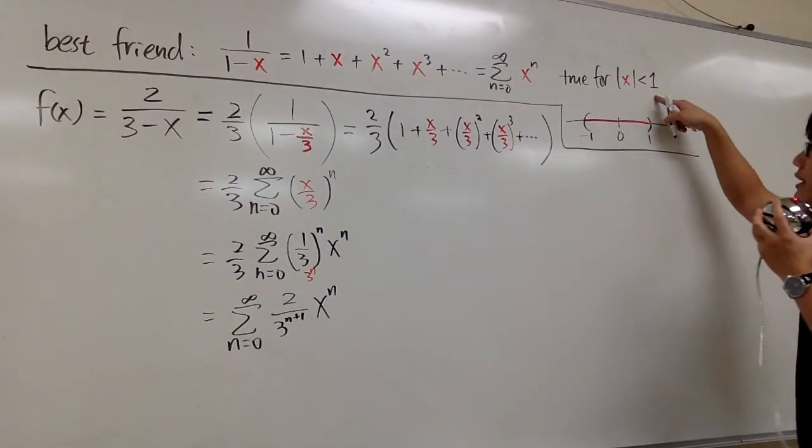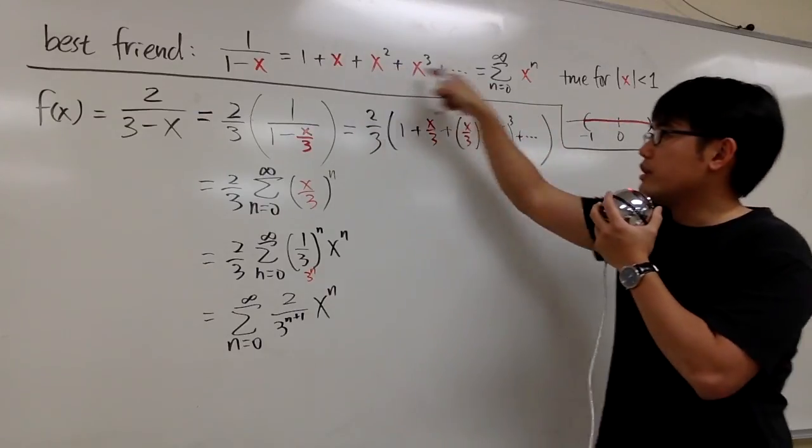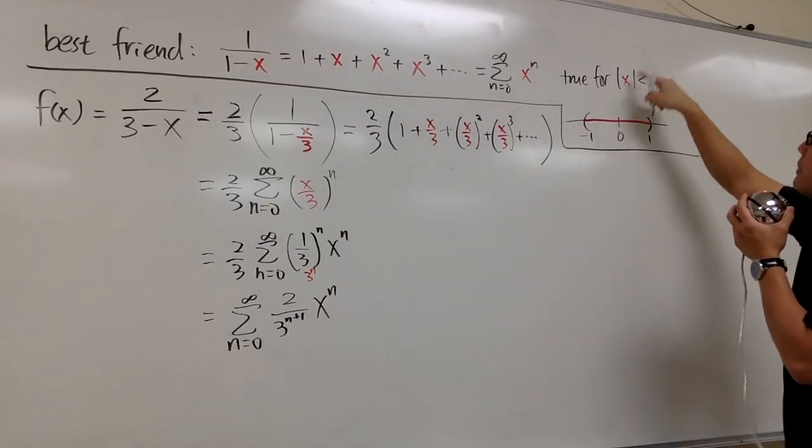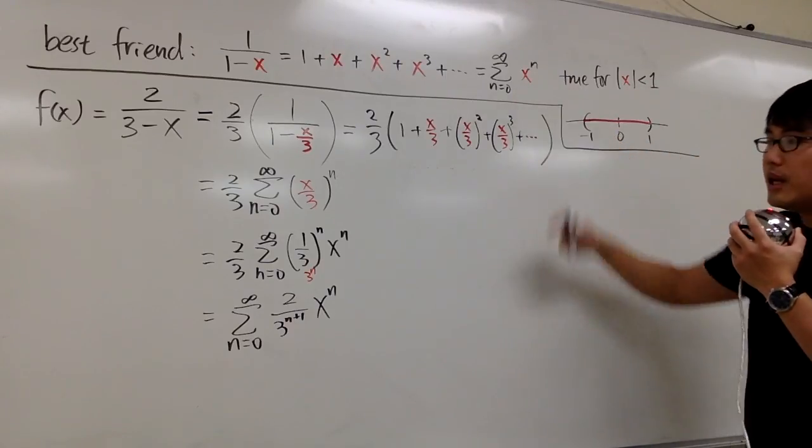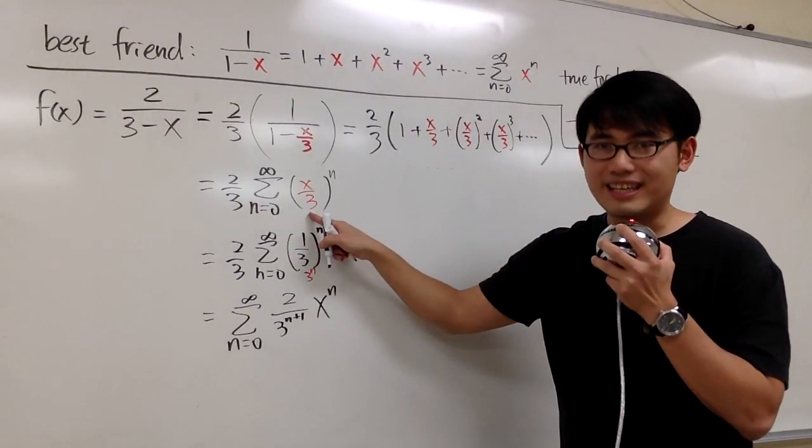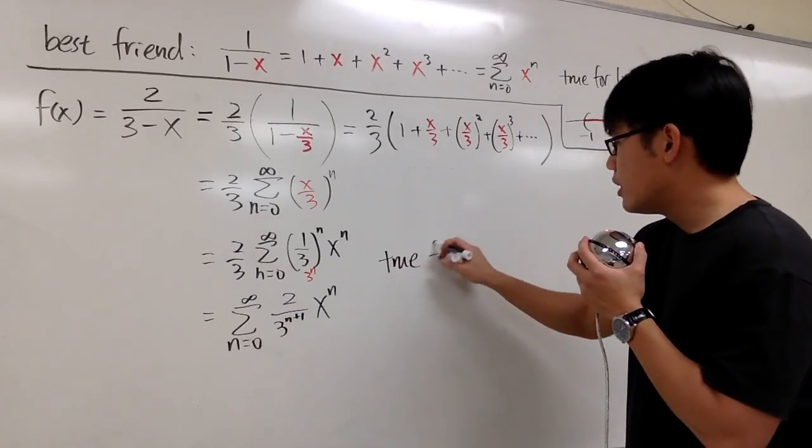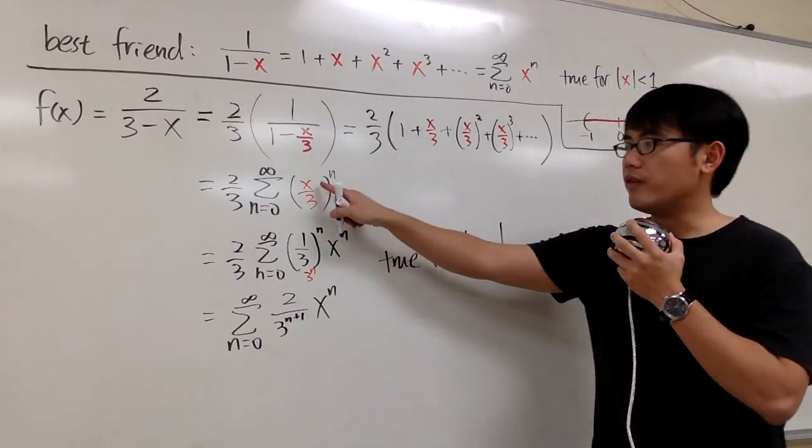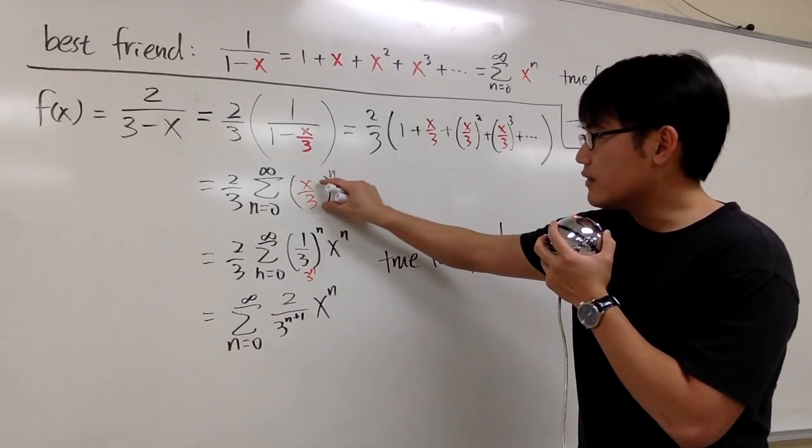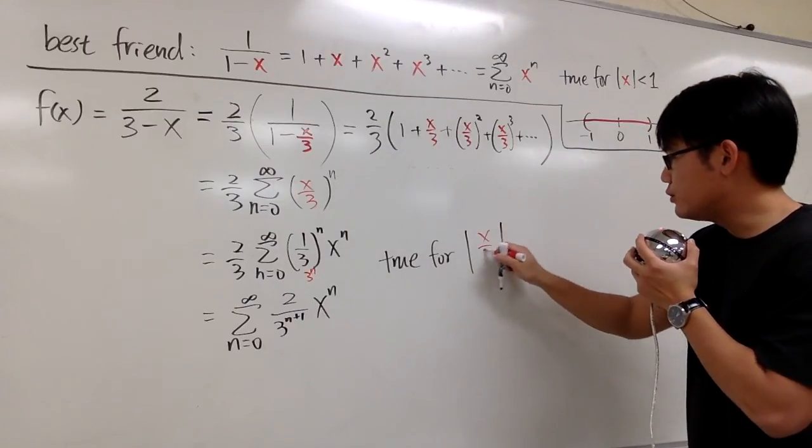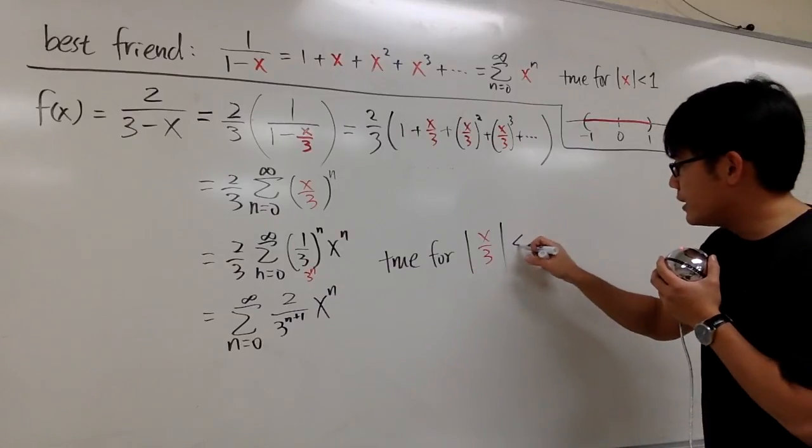And now let's worry about the radius and also the interval of convergence. Our best friend says the original version is that this is only true for absolute value of x is less than 1. And the x we are talking about is this x. But then we plug in x/3 instead. So I will say this is true only for the absolute value of x/3, because we're doing algebra. We plug in x/3 into our best friend. So I plug in x/3 right here as well. I'm just following the same format. This is going to be less than 1.